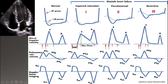When we establish the pseudonormal pattern, the IVRT and acceleration time return to the normal range, and E becomes taller. Compared to normal, E becomes taller than 50 centimeters per second. In that case, left atrial pressure goes higher than normal and we call it abnormal. This is stage 2, or pseudo-normal.